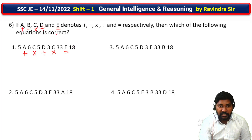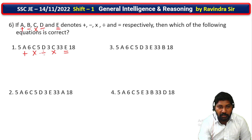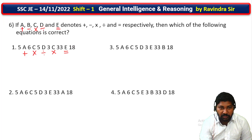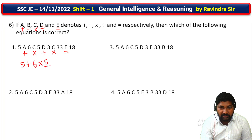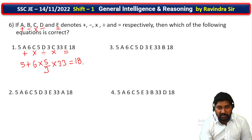Now, to check if the equation is correct: 6 into 5 equals 30, 30 by 3 equals 10. Following the order — division first, then 5 divided gives the value. In two layers it equals 33. If the equation equals 33, and the answer equals 18, this does not match. So the first option is wrong — 5 plus 6 into 5 by 3 into 33 equals 80, which is incorrect.